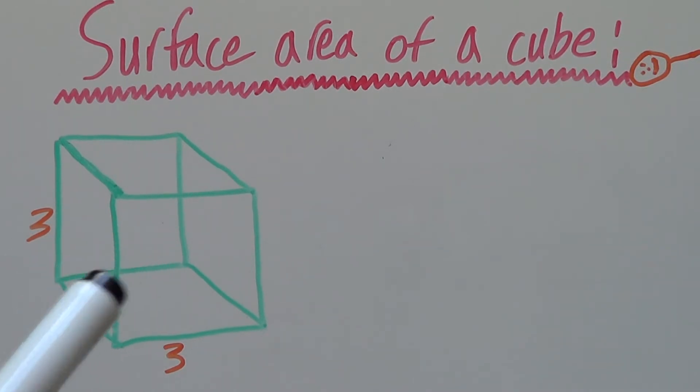For a cube, it's the area of the cube's surface. That includes every one of the cube's six sides.